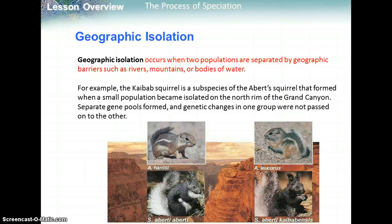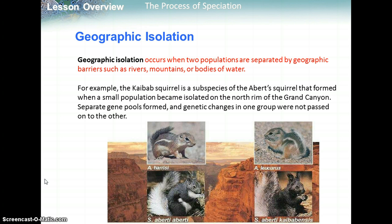Geographic isolation occurs when two populations are separated by geographic barriers such as rivers, mountains, or bodies of water. For example, the Kaibab squirrel is a subspecies of the Abert's squirrel that formed when a small population became isolated on the north rim of the Grand Canyon. Separate gene pools formed and genetic changes in one group were not passed on to the other, so geographic isolation led to reproductive isolation and then two different new species.